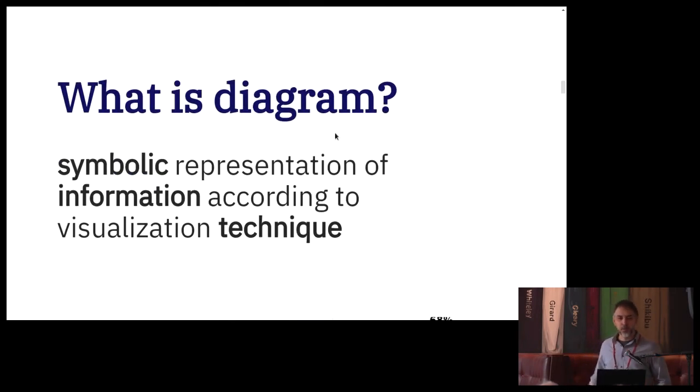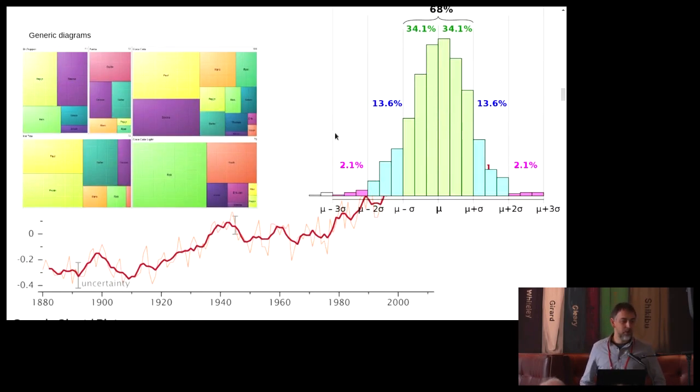And what is a diagram? I used my favorite medium, which is Wikipedia. It says symbolic representation of information according to the visualization technique. It's very concise. Let's talk a little bit about diagrams. First, some generic diagrams. You can tell it's generic when you look at it and you have no idea from what field of study it is. It may be statistics, politics, rocket science—you don't know. It's plots, charts, histograms, and whatever data you have. Just throw it on and you get this generic diagram.